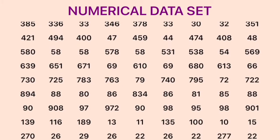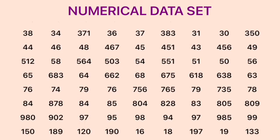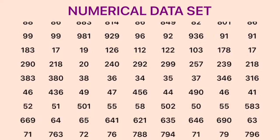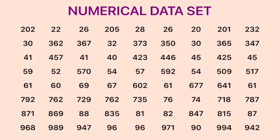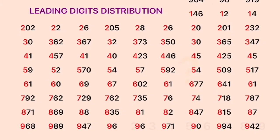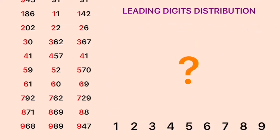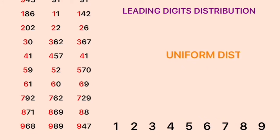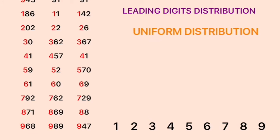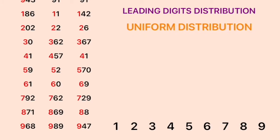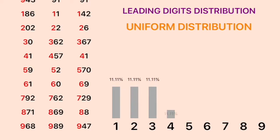First, let's assume there is a data set of numerical data generated naturally without any artificial manipulation. What is the frequency distribution of leading digits in this data set? Usually, people would assume that naturally generated data is uniformly distributed — that is, for each of the nine leading digits from one to nine, each occurs with a probability of one ninth, that is 11.111%.